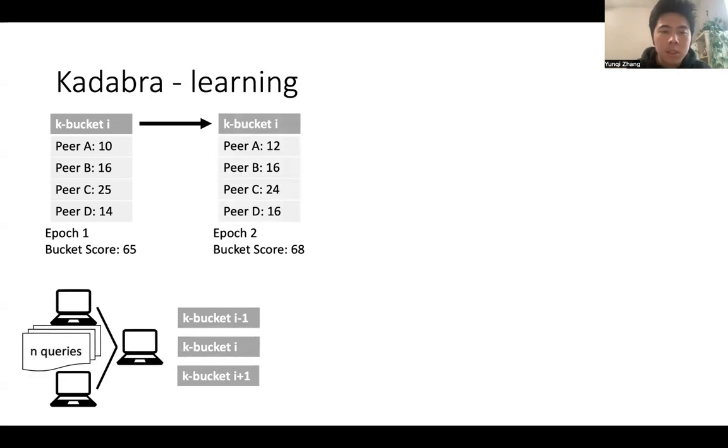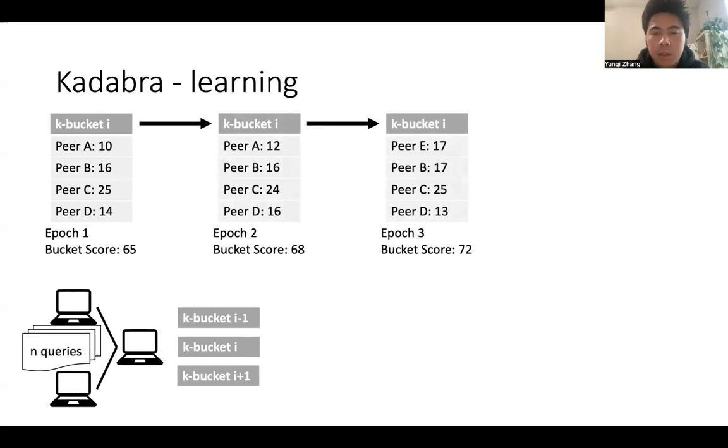Then, after n queries, we are at the third epoch. Since this is an exploration epoch, we replace the worst peer from the previous epoch, which is peer A, we replace it with peer E.